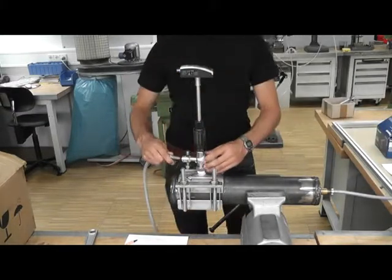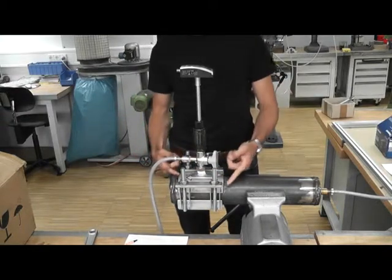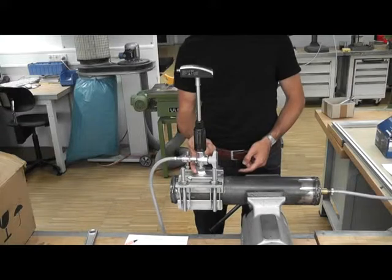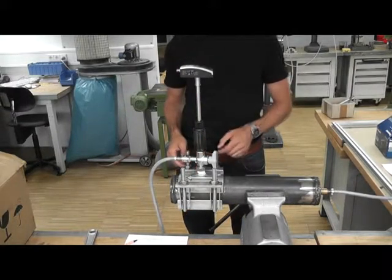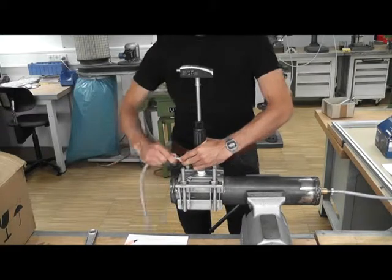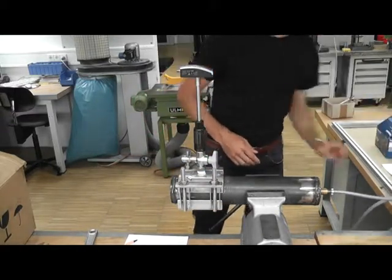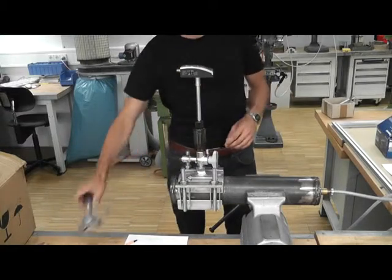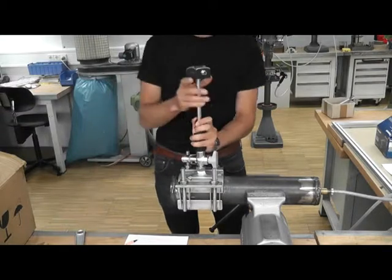Before you uninstall the transmitter, you should also prove if the tapping clamp fits leak-proof on the pipe. Therefore, mount the compressed air hose to the ball valve. If you hear no sound of compressed air, the tapping clamp fits leak-proof on the pipe. The last point is to uninstall the transmitter.